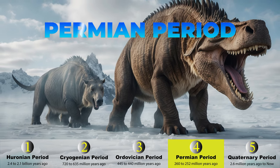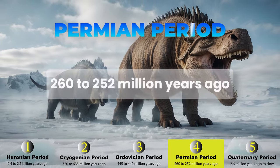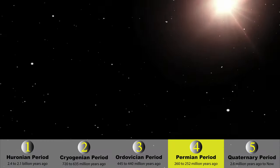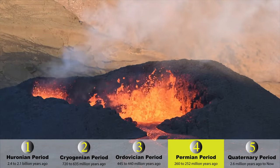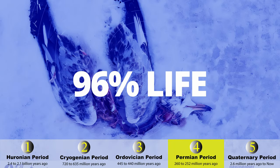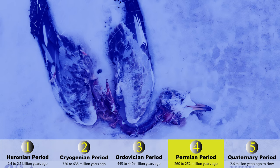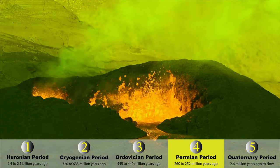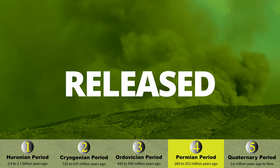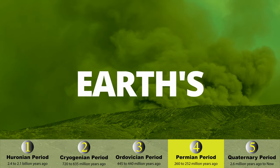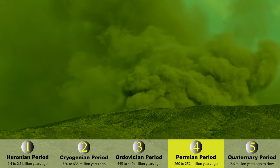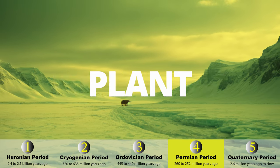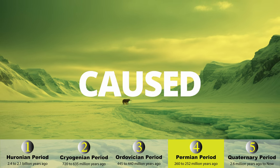The fourth ice age was the Permian period, between 260 and 252 million years ago — the most devastating freeze. A giant meteor impact triggered volcanic eruptions and sent shock waves through the climate, wiping out 96% of life. Some scientists believe a series of volcanic eruptions released sulfur dioxide into the atmosphere, blocking out the sun, causing a significant drop in temperature that prevented plant photosynthesis and in turn caused food chains to collapse.